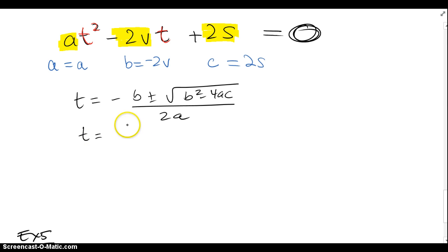So t is equal to negative b, so negative b becomes a positive 2v, actually, plus or minus, because the double negatives make a positive.